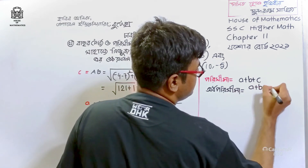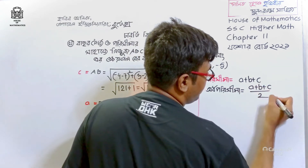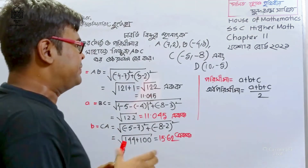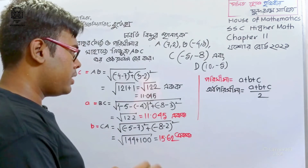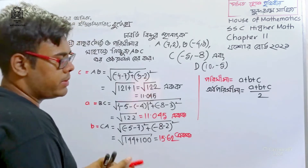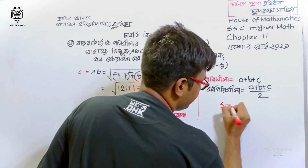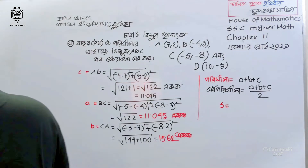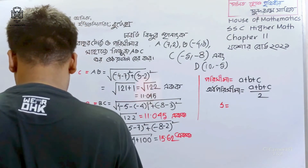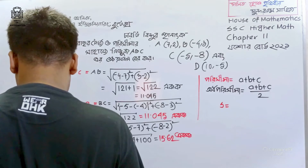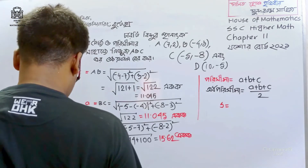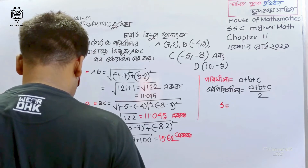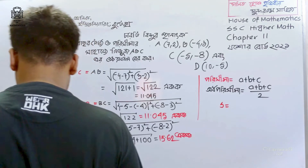So x_b plus c divided by 2. It is equal to 2 root over 122 plus 244, which gives 37.71.